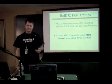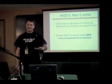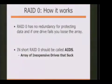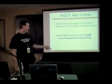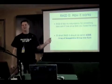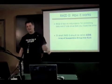RAID zero, because it's a stripe, is not redundant. If you don't have one of the drives, you've got nothing — you have to have some part of that other drive. I call them AIDS, because they shouldn't be called RAID. It's an array of independent drives that suck.